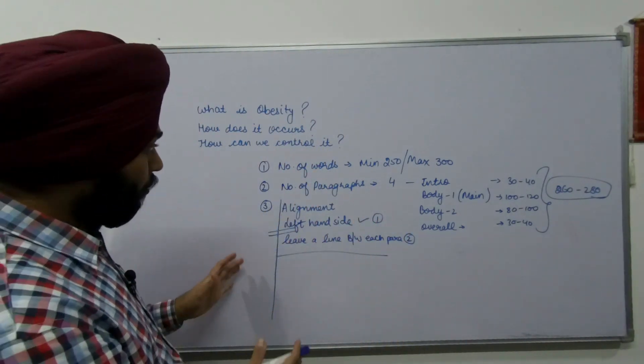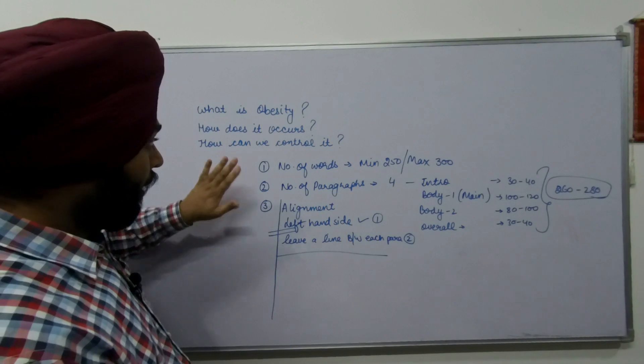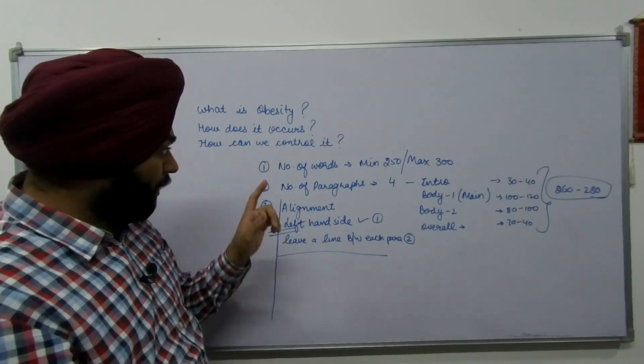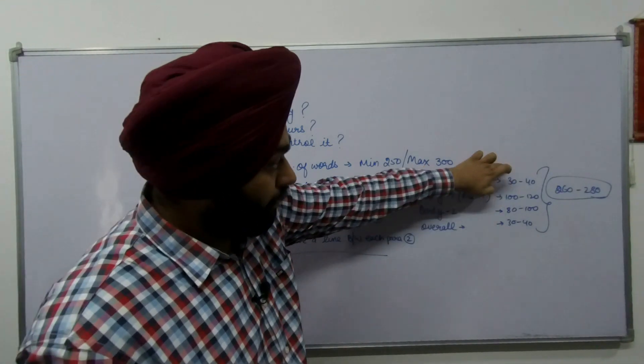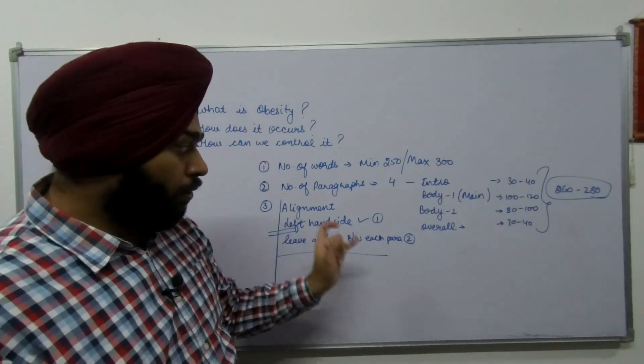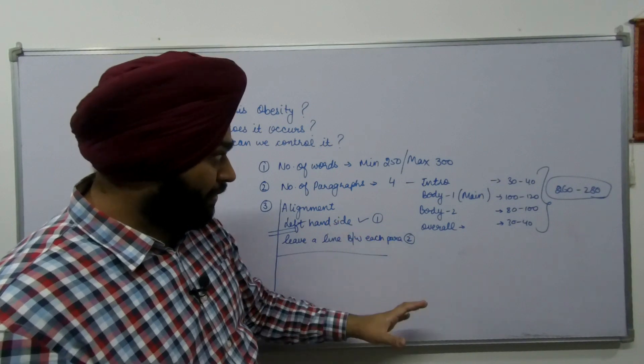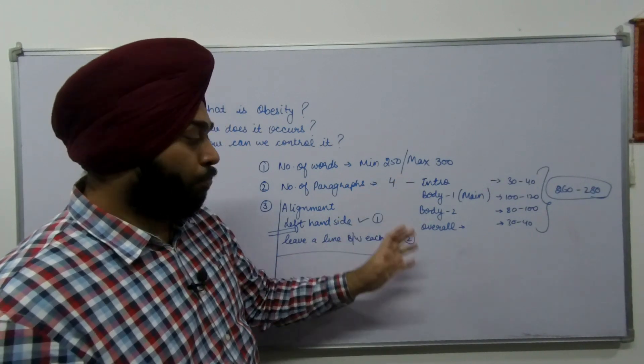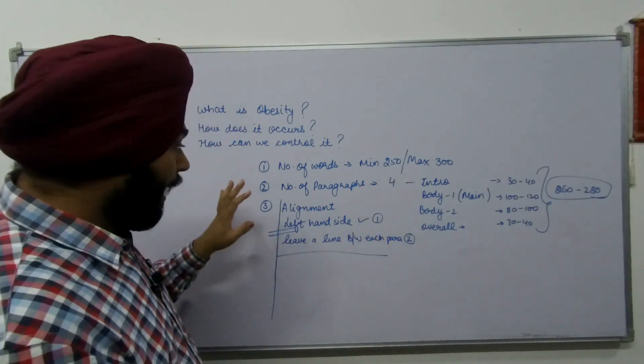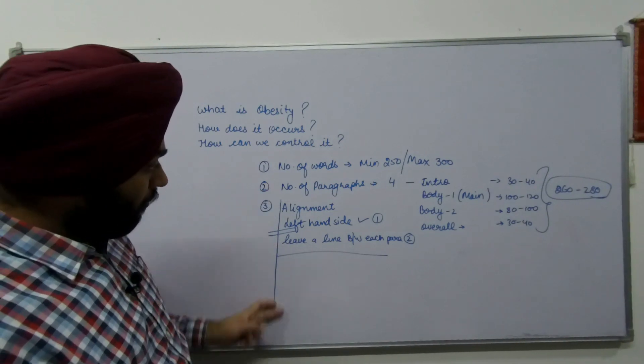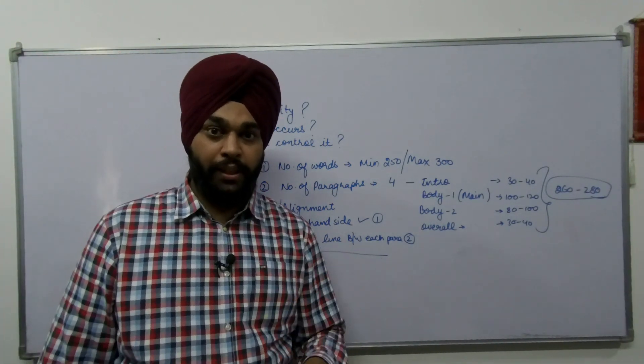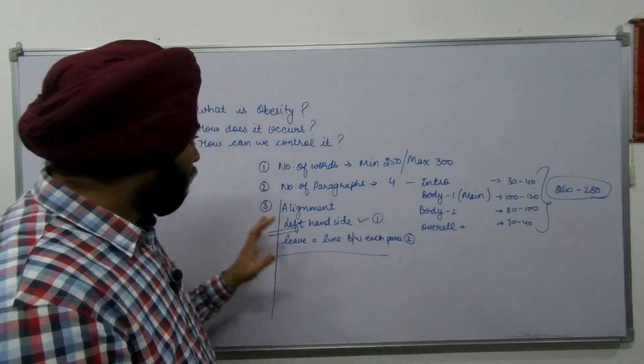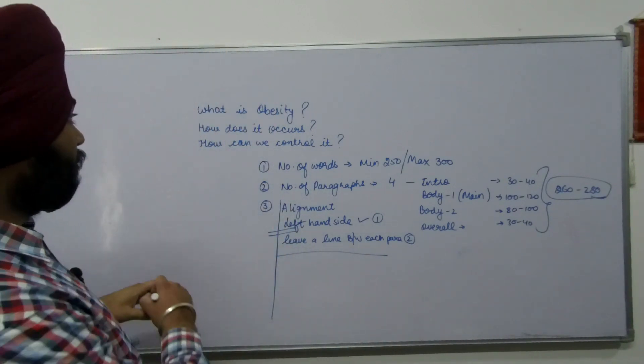This is the format of the essay that you must follow. I am going to repeat quickly: number of words minimum 250, maximum 300. This is the word limit for each paragraph. There will always be four paragraphs for an IELTS essay: introduction, main para body 1, body 2, and the overall. Third, your alignment should always be on the left hand side, plus you must always leave a line between each paragraph. Now we are going to start with this essay.